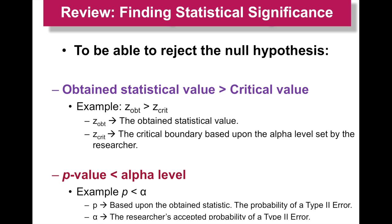Just a quick review of z: if we want to be able to reject the null hypothesis, our obtained statistical value has to be larger than our critical value. So z obtained has to be larger than z crit. This is going to be the exact same theory, but now we're replacing z with t. So instead of z obtained having to be larger than z crit, now t obtained has to be larger than t crit.